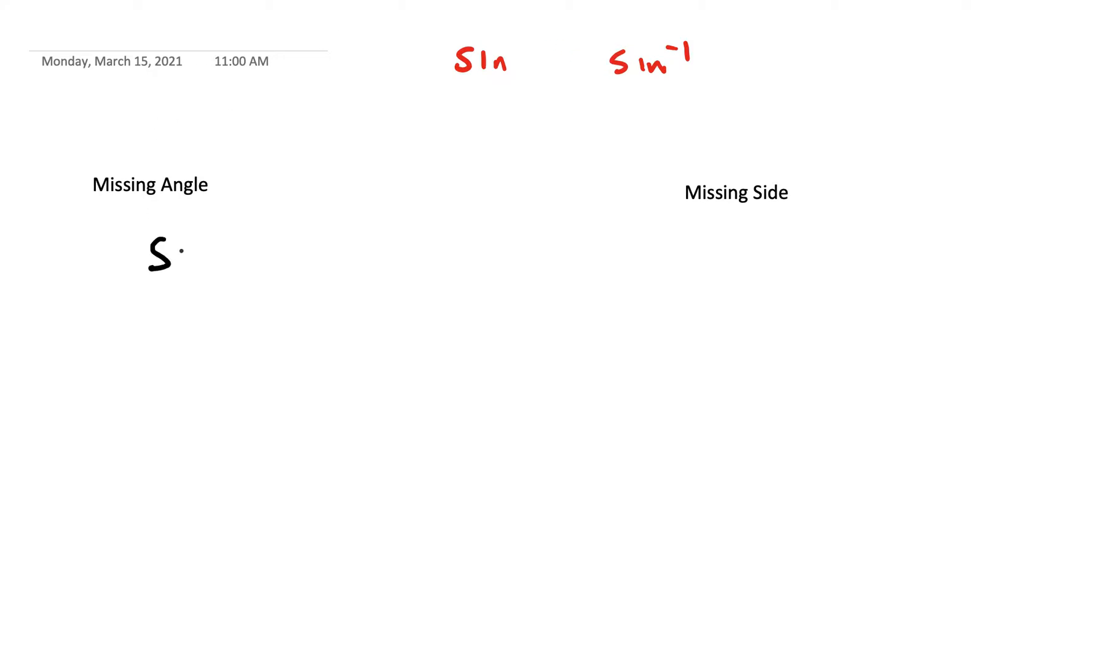So a missing angle would look like this: sine of x equals whatever the decimal is. A missing side will actually have the angle already there, like sine of 38 degrees.